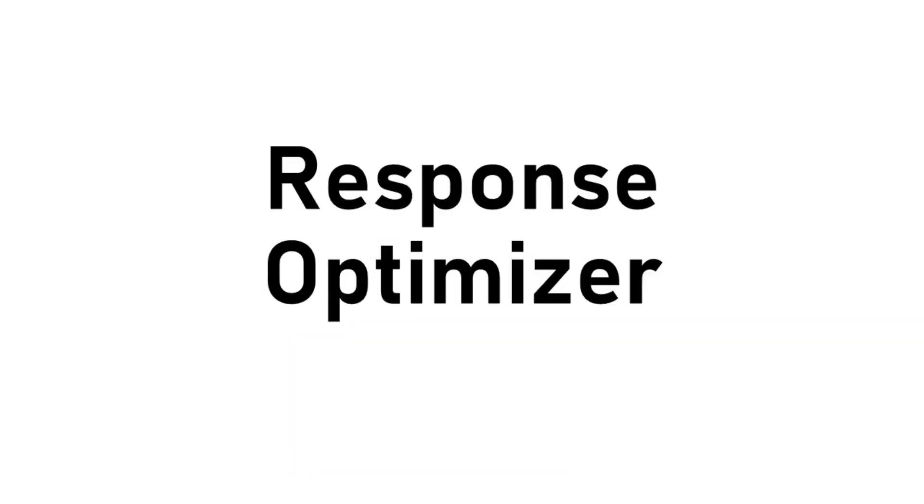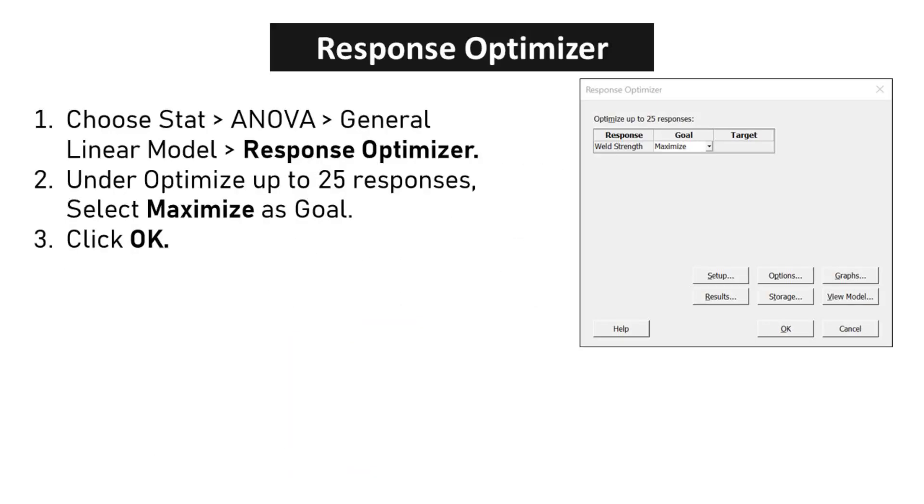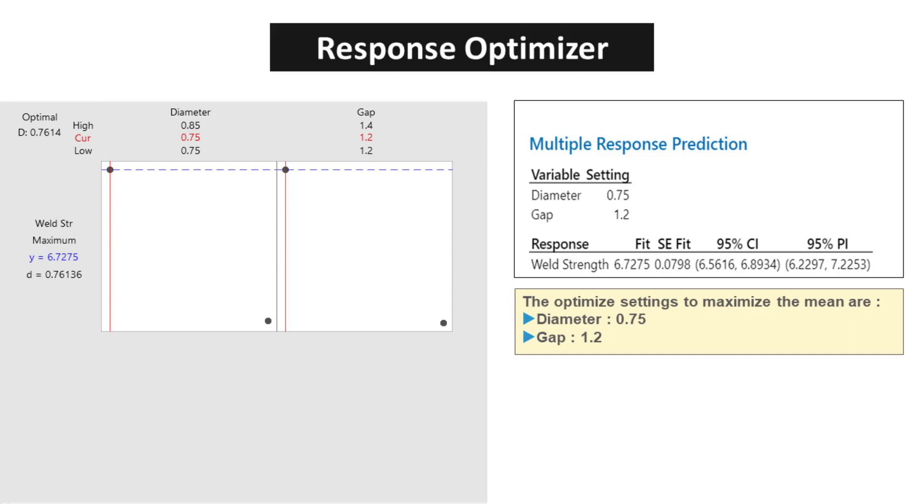Response Optimizer: Choose STAT, ANOVA, General Linear Model Response Optimizer. Under Optimize up to 25 responses, select Maximize as Goal. Click OK. Using the Response Optimizer, the optimal settings to maximize the mean are diameter 0.75 and gap of 1.2. The Fitted mean is 6.7275.